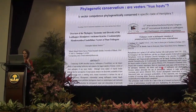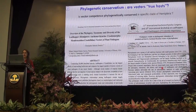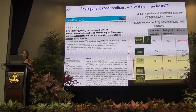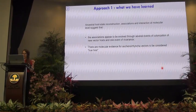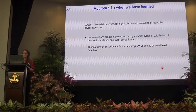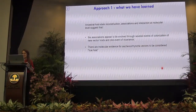Regarding phylogenetic conservatism, this is the last strategy we use to infer the nature of the association. It was hypothesized in 2013 that vector competence may be associated with a character that is phylogenetically conserved. For this reason, we ran protein-protein interaction experiments and provided evidence for vector capacity being associated with molecular traits that explain vector competence and are phylogenetically conserved. What we learn from the first approach is that the association appears to have evolved through different amounts of colonization, and there is molecular evidence that Auchenorrhyncha and Sternorrhyncha vectors should be considered true hosts.